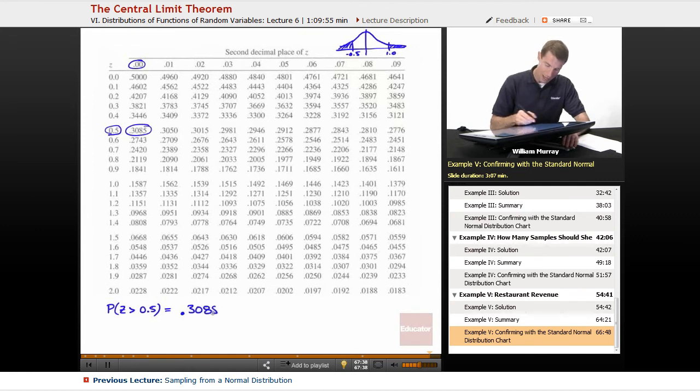And the probability of Z being bigger than 1, 1.0. Here's 1.0. And it's 0.1587. 0.1587.